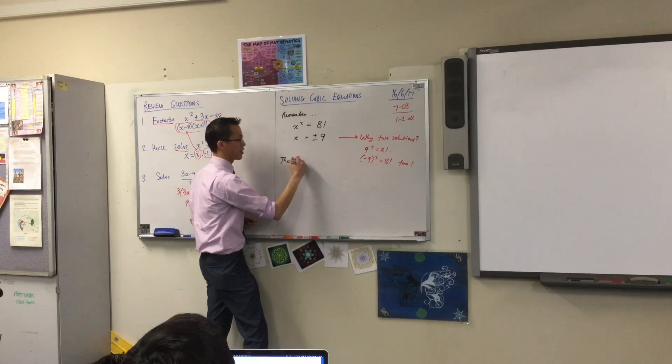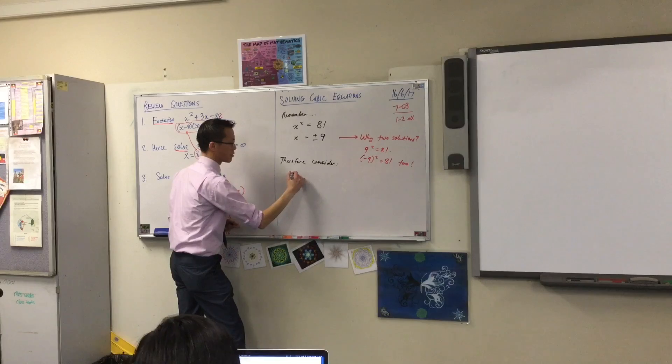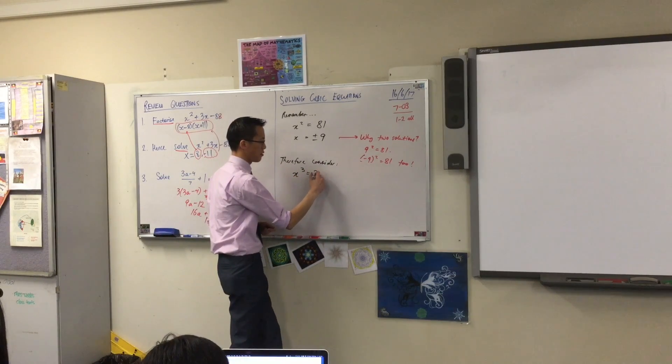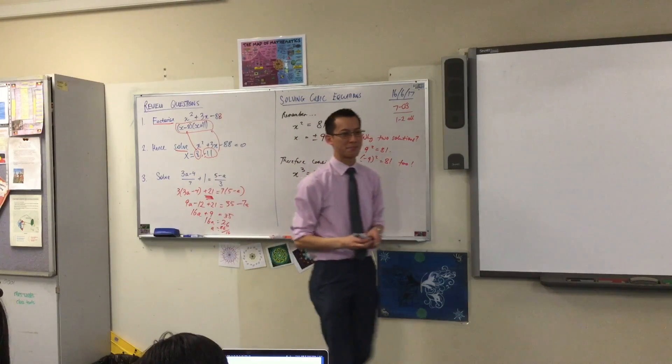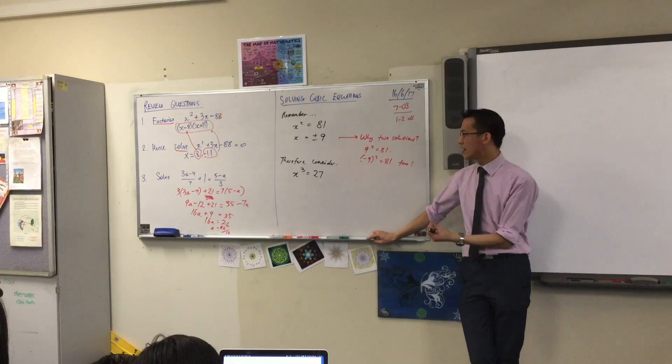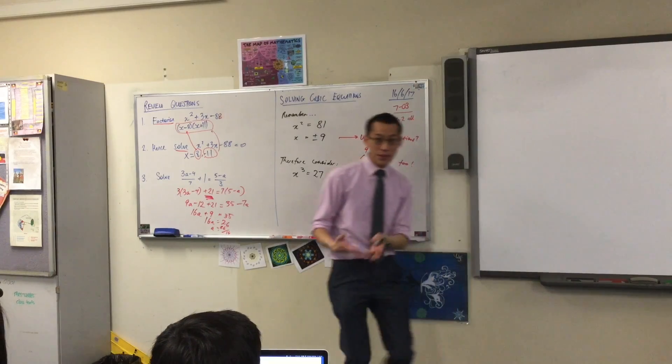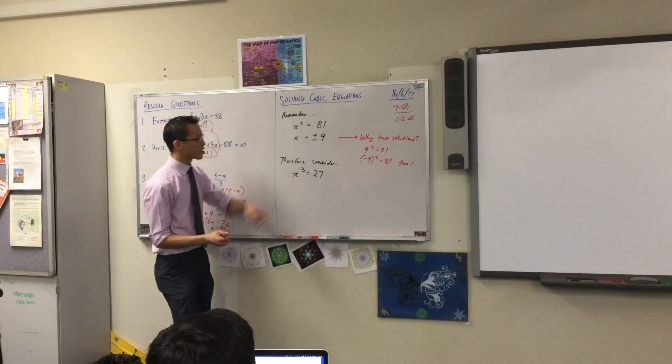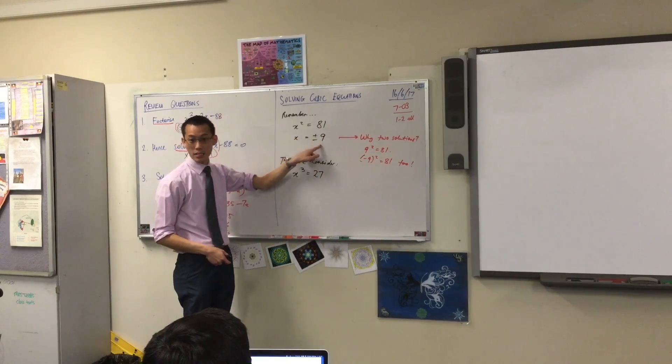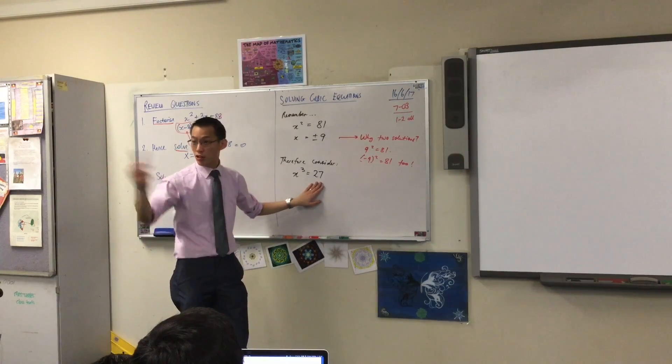Now, therefore, consider, let's have a go with this. So here's another equation. And I'm trying to work out how many numbers are there that I can put into it that will solve it. Now, an obvious choice is just like you took the square root of 81 to get to 9. You can take the cube root of 27 to get to the answer. And the cube root is 3.